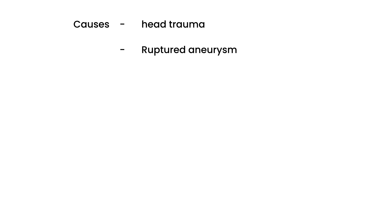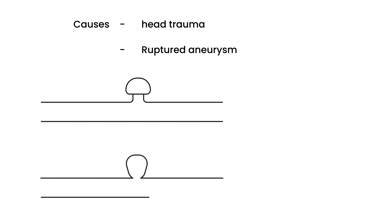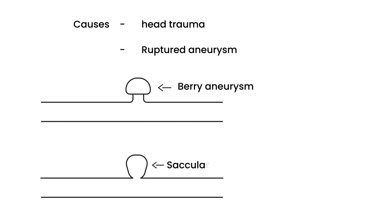There are two types of aneurysms that are really the culprits. This one is called a berry aneurysm — maybe because it looks like a berry. And this one is called a saccular aneurysm, spelled S-A-C-C-U-L-A-R. Those are the two types of aneurysms, described based on shape.